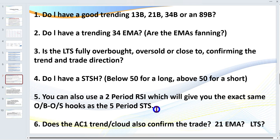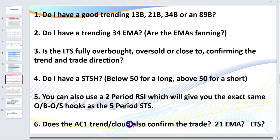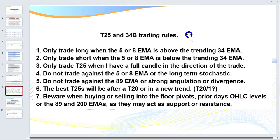Another very important consideration: we really want to be trading in the direction of a higher time frame. Using our formula for picking the anchor charts — is the trade in the direction of the anchor chart trend and/or cloud? If you have the ability to put the cloud on your chart, fantastic. What we're really looking for is: with the cloud and the trend, am I trading in the direction of the anchor chart's 21 EMA and ideally the long-term stochastic? This will increase your trade probabilities.